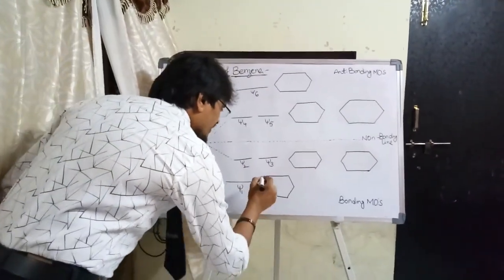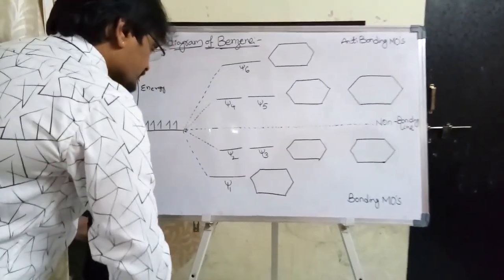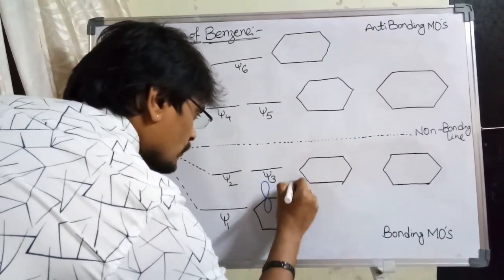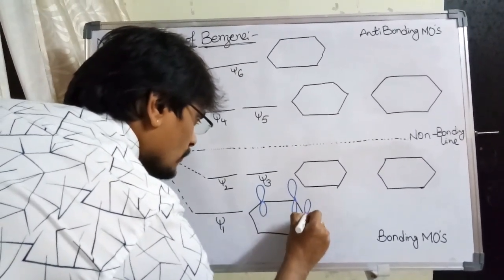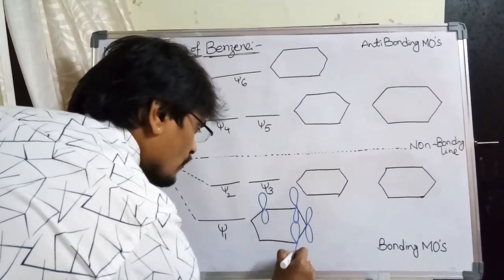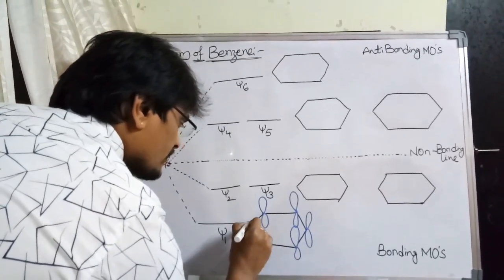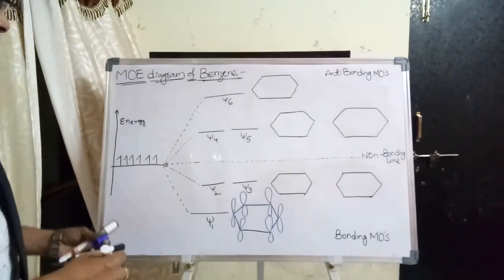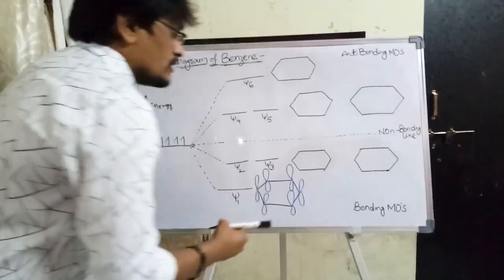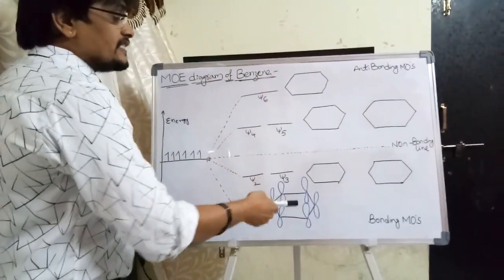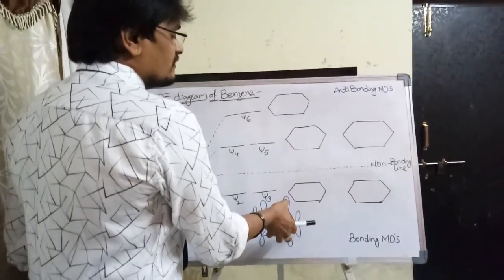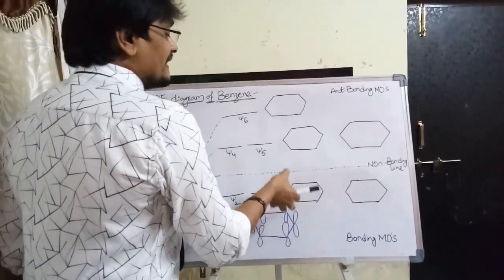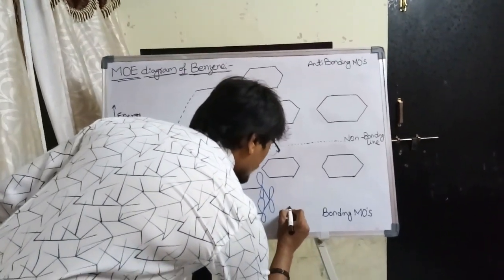Now let's write the lobes. There are six lobes — lobe 1, lobe 2, lobe 3, lobe 4, lobe 5, and lobe 6 — because there are six carbons. Now, the number of nodes: since psi 1 occupies the lowest energy level, the number of nodes associated with this lowest occupied molecular orbital is zero, that is, node equals zero.